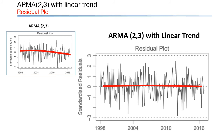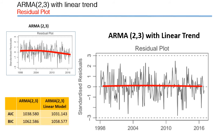Moreover, the AIC and BIC scores of this model are smaller than those of the previous model. So in this case, ARMA(2,3) with a linear trend model is a more desirable choice as the best model.